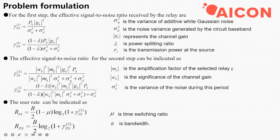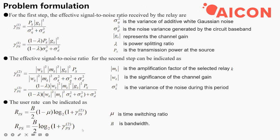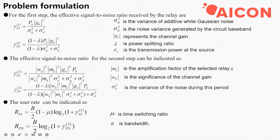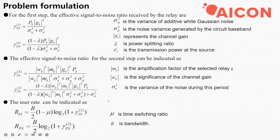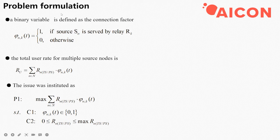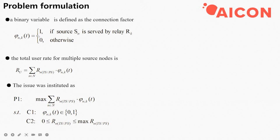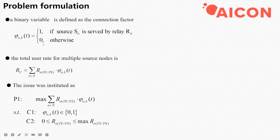The user rate can be indicated as this and this, where mu is the time switching ratio and B is the bandwidth.